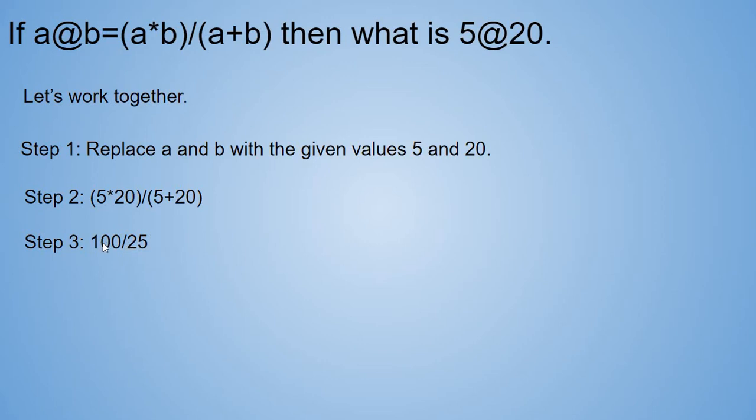So that gives us 100 divided by 25, and that simplifies to 4. And guess what? 5 at 20 is 4. Yay! We got it! Next question!